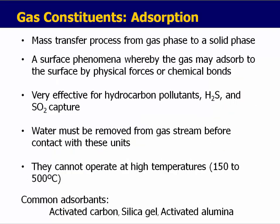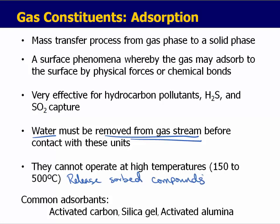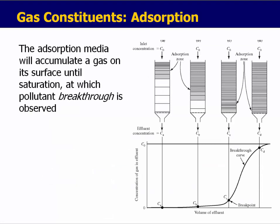In the second mechanism, adsorption is utilized — mass transfer from the gas phase to a solid phase. The surface phenomena adsorbs the gas by creating chemical bonds. Adsorption towers can be very efficient for hydrocarbons, H₂S, and SO₂ capture. It's very important that water is first removed from the gas stream. These also cannot operate at high temperatures of 150 to 500 degrees Celsius because doing so would inactivate the adsorption or release the adsorbed compounds back into the gas stream — it literally burns them off. Common adsorbents are activated carbon, silica gel, and activated alumina.